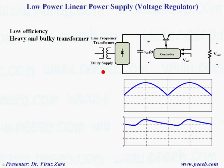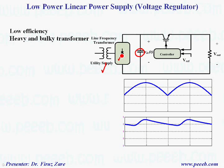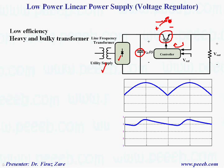Basically, in linear power supply we have a low frequency transformer because we need to step down the voltage. Then through this diode rectifier, we can rectify the input voltage and using this capacitor as a filter, we can get DC voltage. But we have a ripple and also the voltage is not controlled because the diode is not a controlled rectifier. So in this case, we can have this transistor operating in linear mode and by changing the bias current, we can change the voltage across the transistor in order to control the output voltage. So here we can see that this transistor operates as a variable resistor.